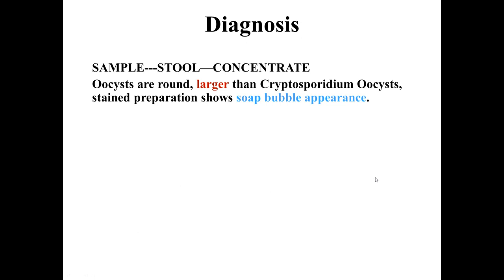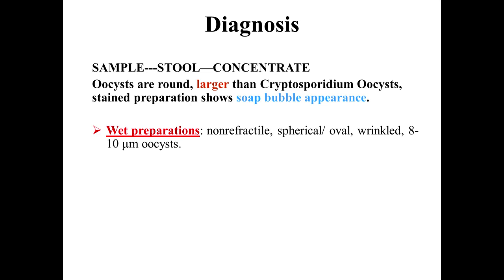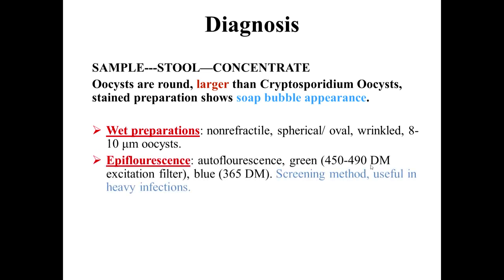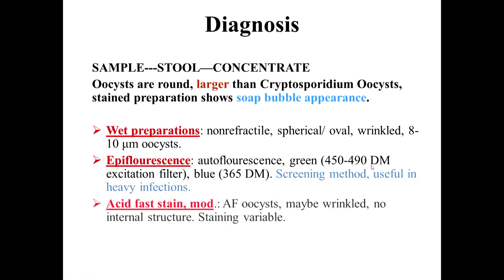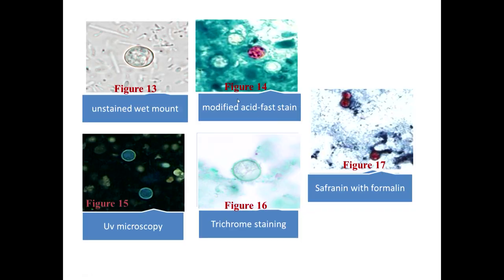Diagnosis is usually by stool sample, which needs to be concentrated. Oocysts are larger than Cryptosporidium cysts and show a soap bubble appearance. A wet preparation shows non-motile wrinkled oocysts, or fluorescence testing can pick up cysts with greater sensitivity. Modified acid-fast stain also shows wrinkled oocysts staining acid-fast. Biopsy samples can also be examined by histopathological staining. Under ultraviolet microscopy, the oocysts can also be visualized.